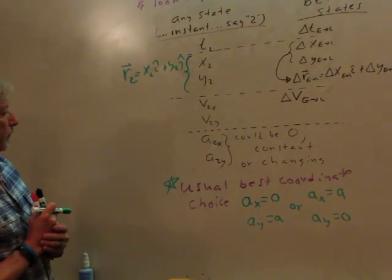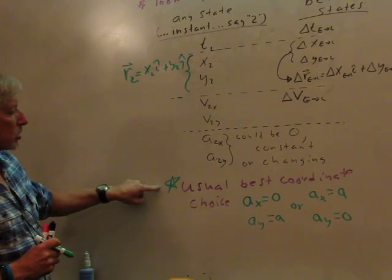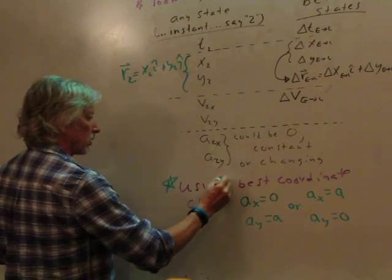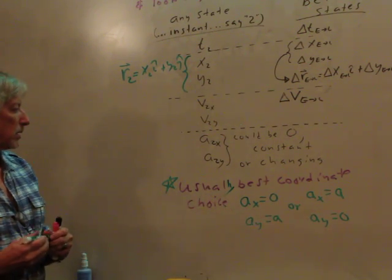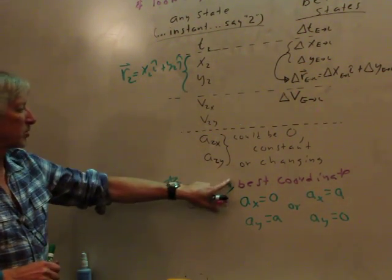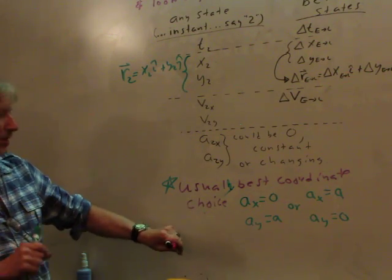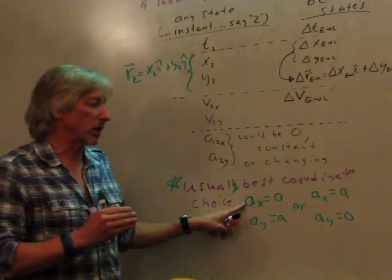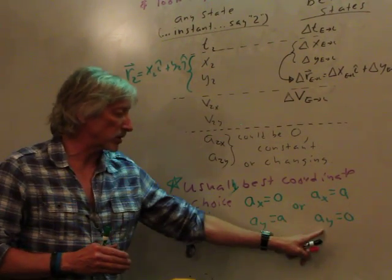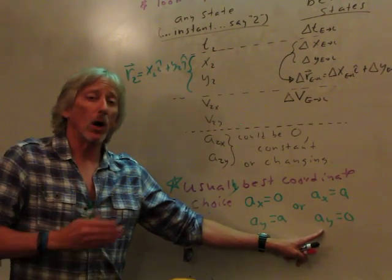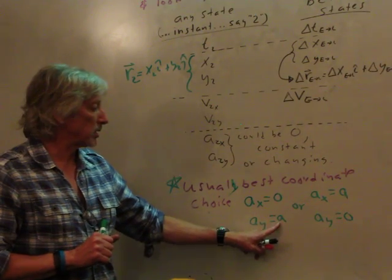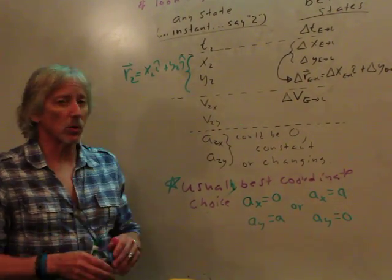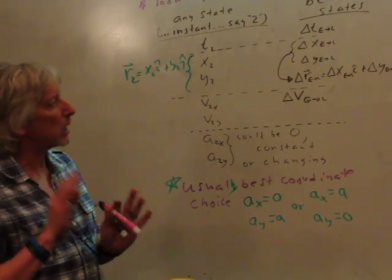Just introduction here. It's usually best, usually, there you go, best, or the usual best coordinate choice is a coordinate system where there's no acceleration in one direction, either the X or the Y direction. And all of the acceleration is either in the X or the Y direction. That's a good choice, and you'll see that as we work on it. So just kind of file that away.